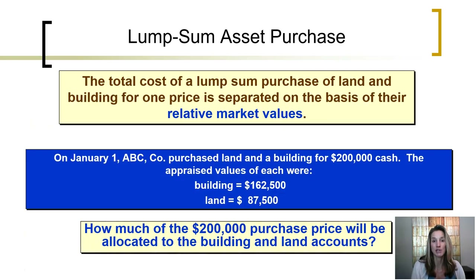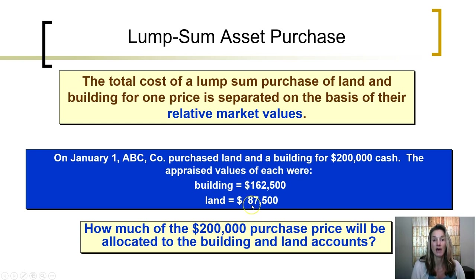If an asset is purchased as part of a lump sum purchase — in other words, purchasing more than one asset for one price — the total cost is separated based on the relative market values. For this example, on January 1st, ABC purchases land and a building for $200,000 in cash. The appraised values were: the building was valued at $162,500, and land was valued at $87,500. They are figuring out how much of the $200,000 purchase price should be allocated to building and land.